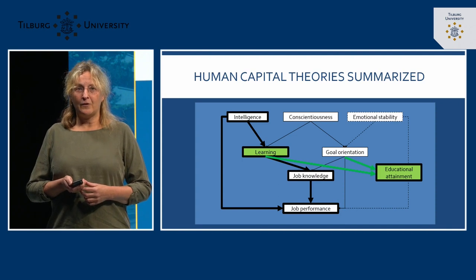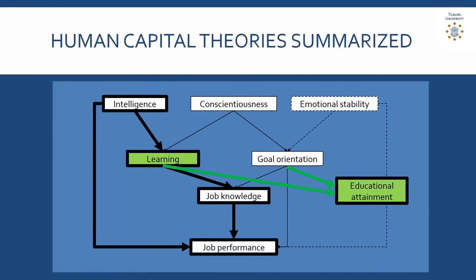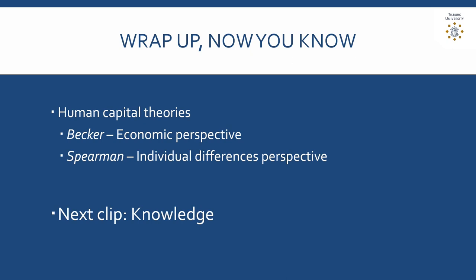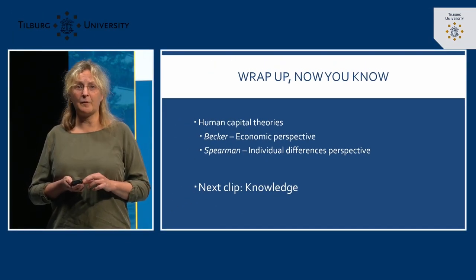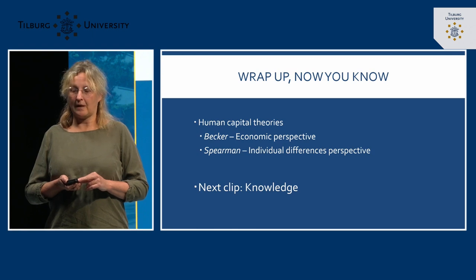Summarizing these two theories: how do individual differences in human capital contribute to performance? The individual differences that matter for overall performance are intelligence, Conscientiousness, and Emotional Stability. Intelligence has a double effect — it not only directly contributes to job performance, but also contributes to learning. This is where the two theories come together: if you are able to learn more quickly, you are also able to achieve a higher level of education. This brings me to the end of this knowledge clip. We discussed two human capital theories: Becker's economic perspective and Spearman's individual difference perspective. In the next clip, I will zoom deeper into the concept of knowledge.